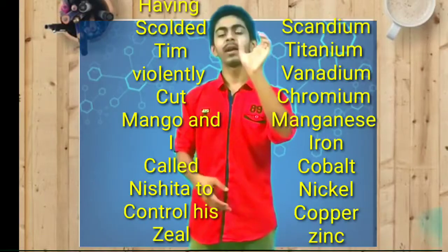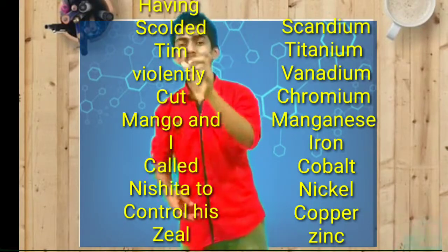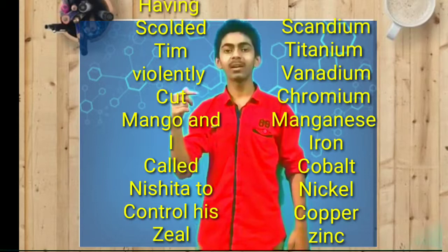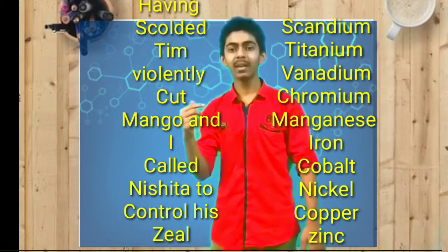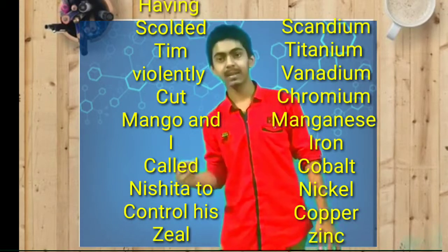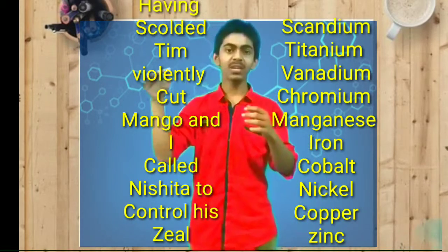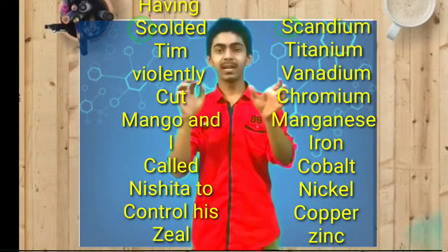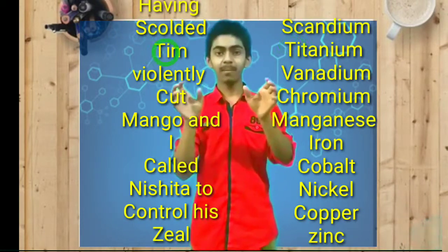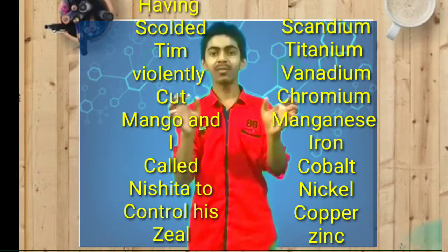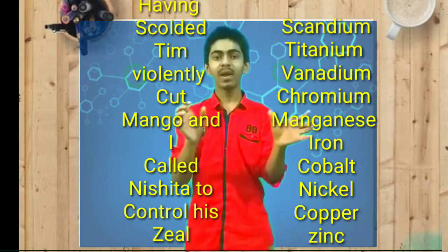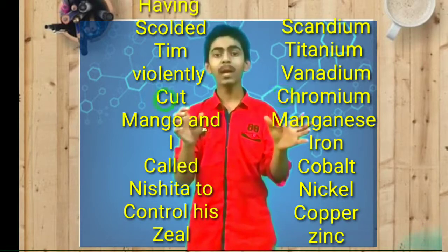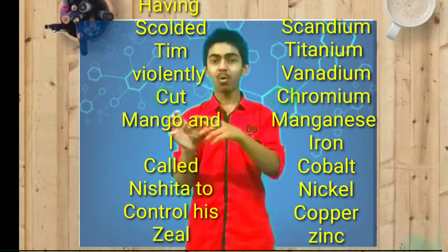The trick for atomic numbers 21 to 30 is: Having Squalid Him, Violently Cut Mango. 'Having' is optional. Sc for Scandium. Ti for Titanium. V for Vanadium. Cut — C for Chromium. Mango — M for Manganese.